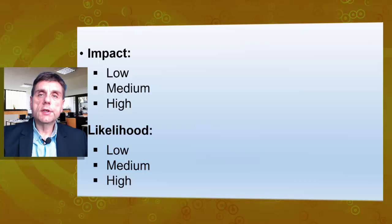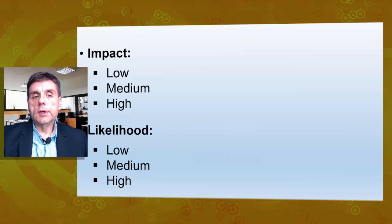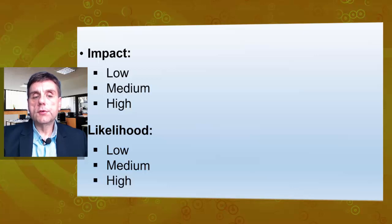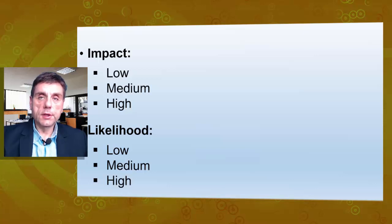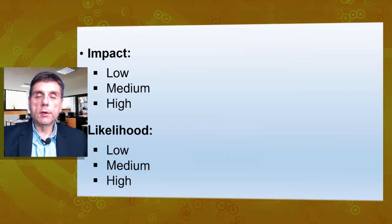Or we can expand this scale and say, for impact: very low is 1, low is 2, medium is 3, high is 4, and very high is 5. The same applies to likelihood: very low is 1, low is 2, medium is 3, high is 4, and very high is 5. With this expanded scale, we could have 25 possible combinations, compared to only 9 possible combinations with the simpler 3-point scale.